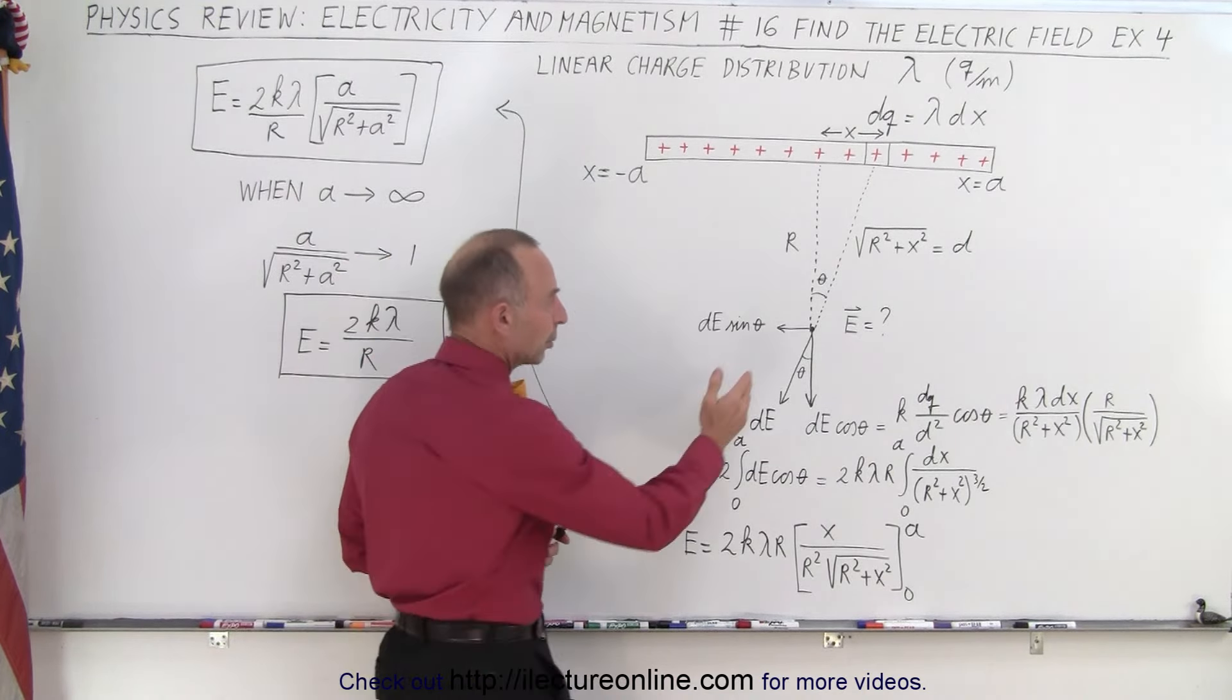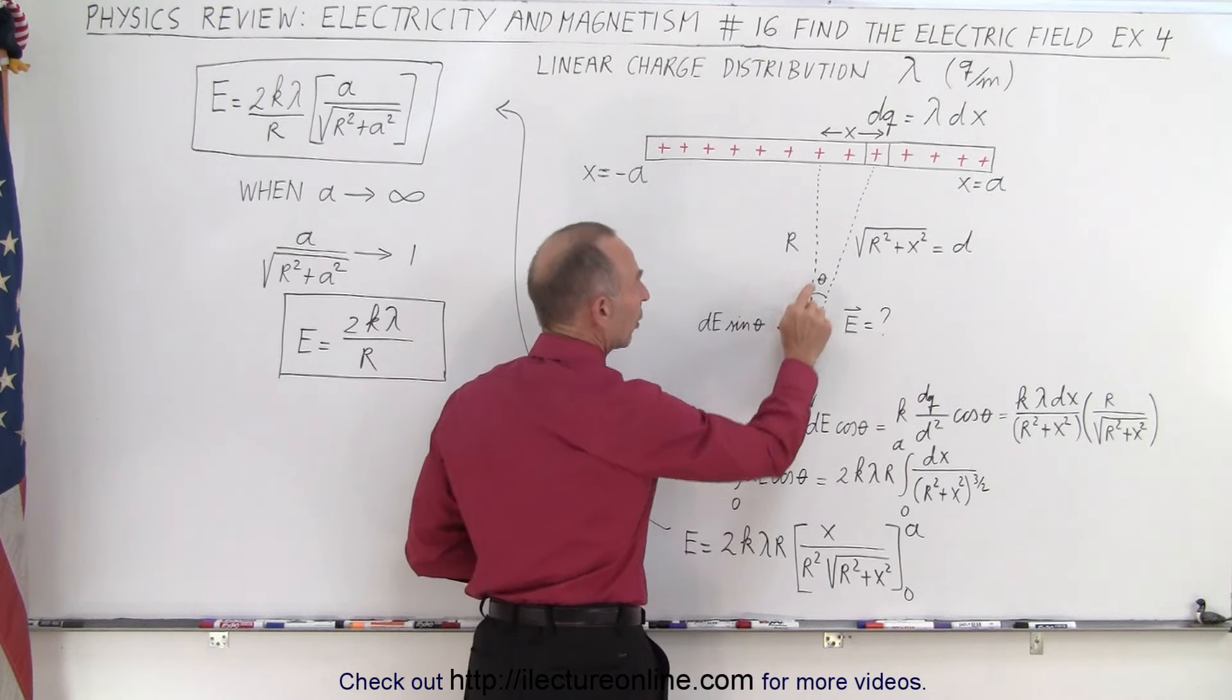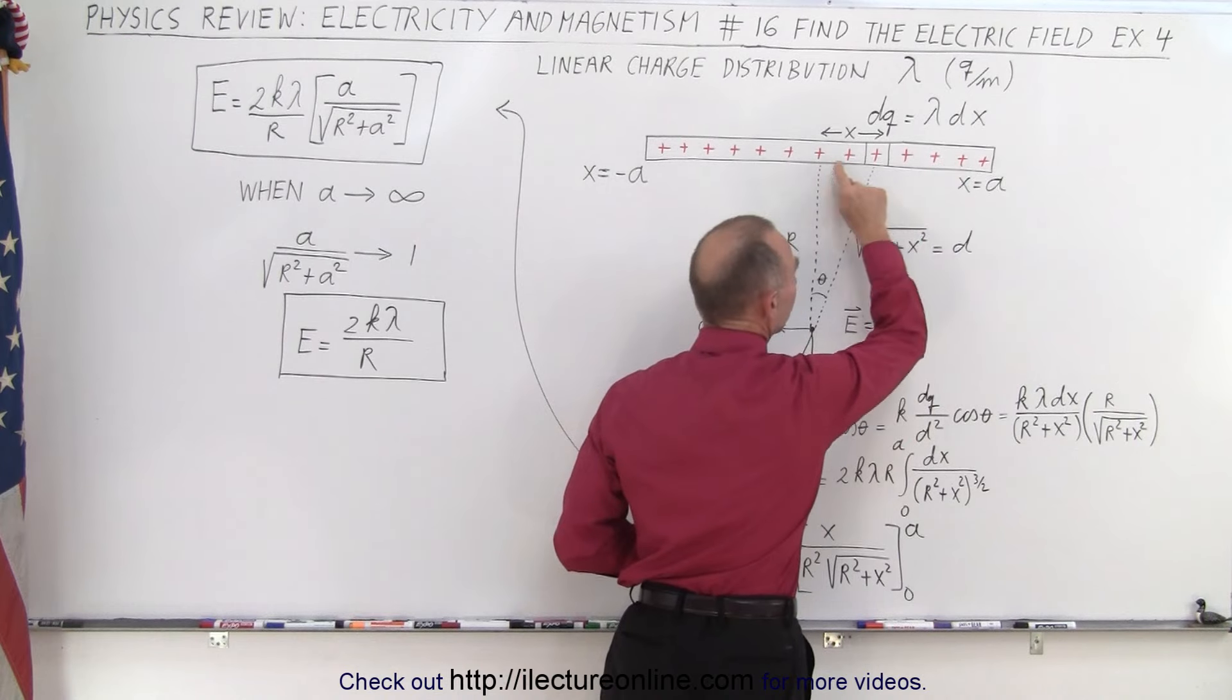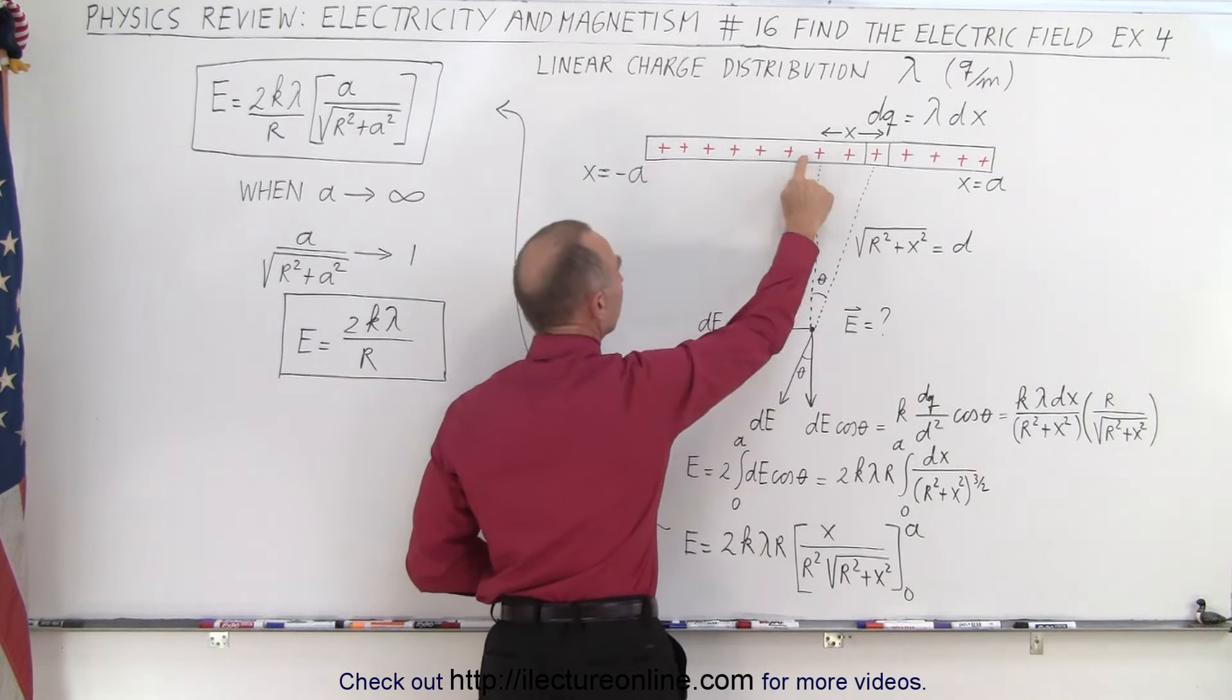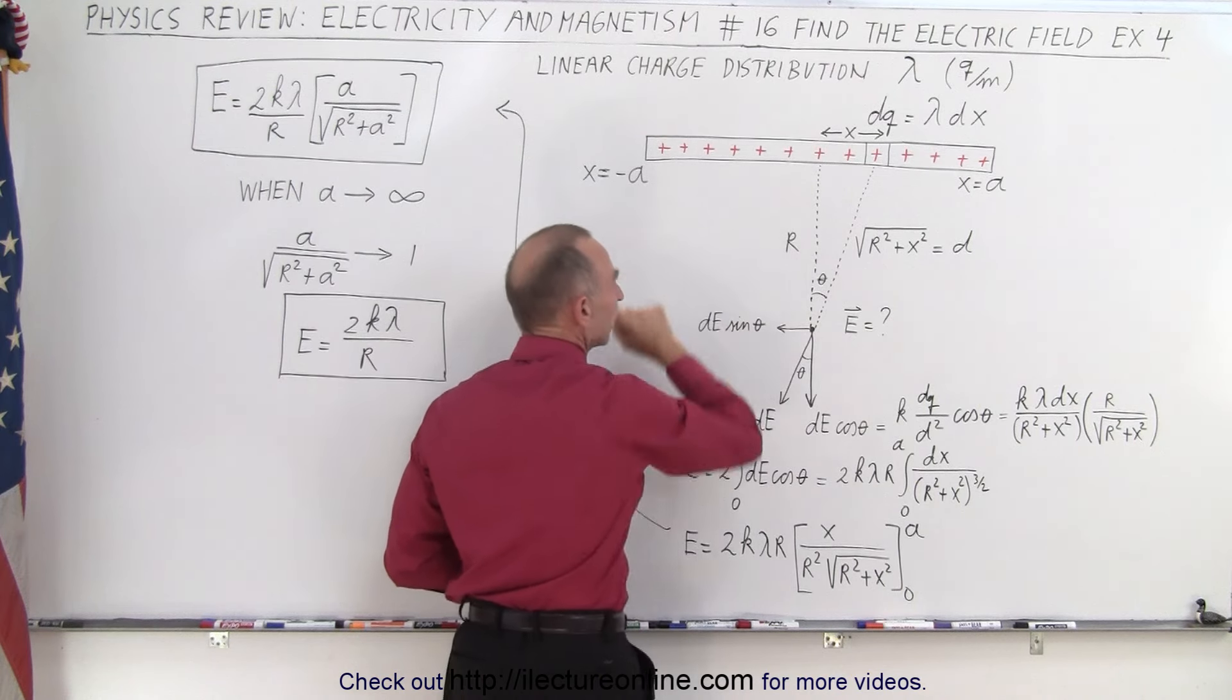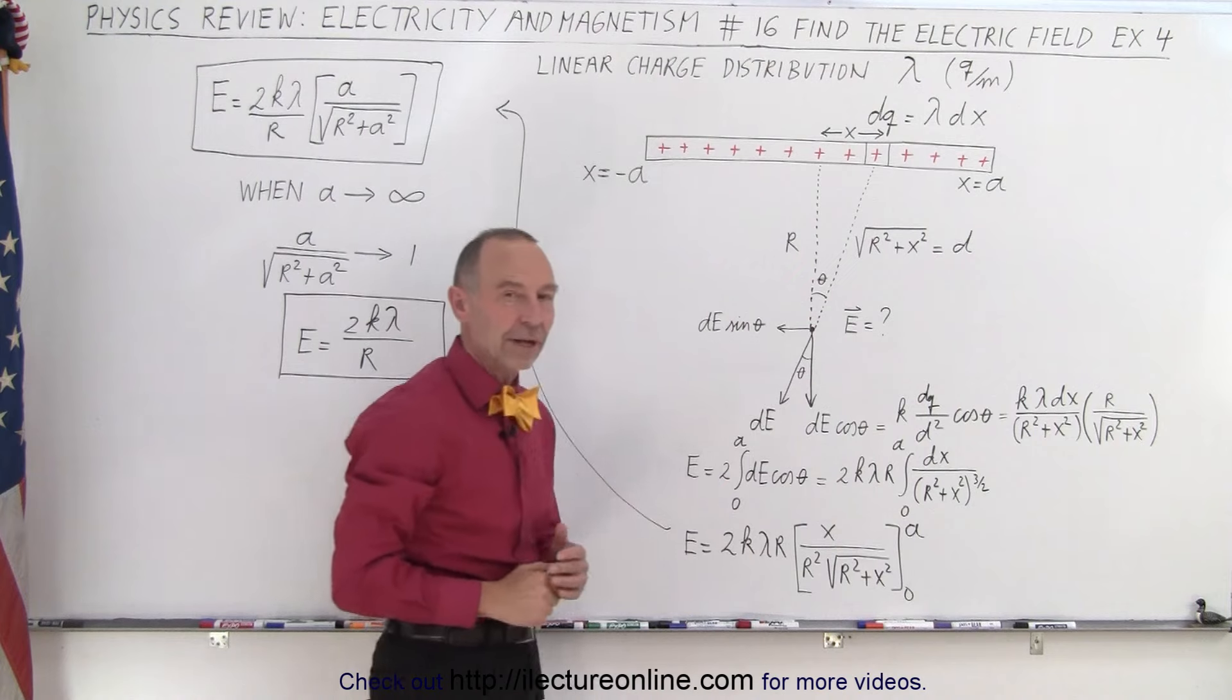The reason why we want to put it right in the middle is because this component here will cancel out. All the additions of the charge distribution over here will cancel out in the horizontal direction with all the distribution of charge on this side, and so you only have to worry about the component that acts straight downward.